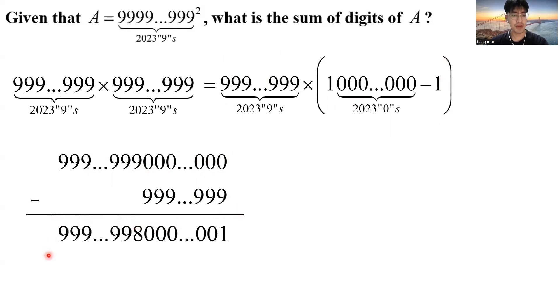That is just 2,022 nines, 8, following with a lot of zeros and a 1. So this is the number A. What is the sum of digits of A? I have 2,022 nines here, and 8 and a 1, which makes up another 1, another 9. So in total, I have 2,023 nines, which multiply together to get 18,207.